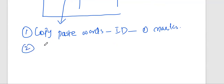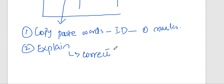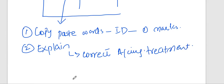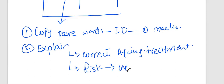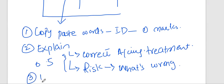Step two: when you identify a risk, explain it in two sub-steps if accounting treatment is applicable. First, explain the correct accounting treatment — your accounting knowledge will be tested here. Second, explain what the management has done wrong. When you explain it in these two steps you get 0.5 marks. Please conclude your audit risk with linkage to the impact on financial statements.